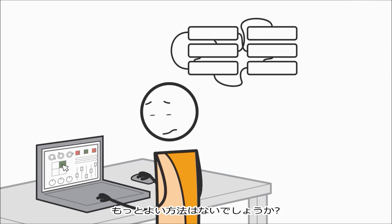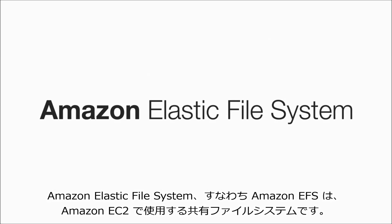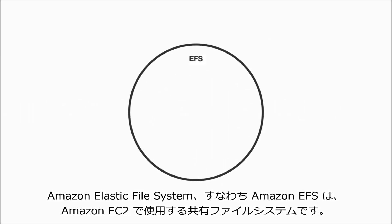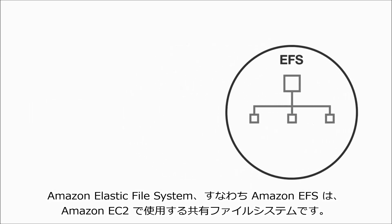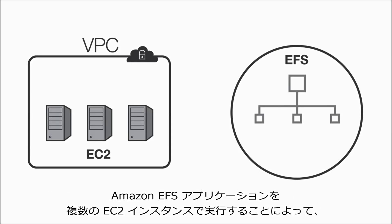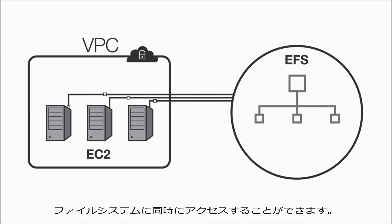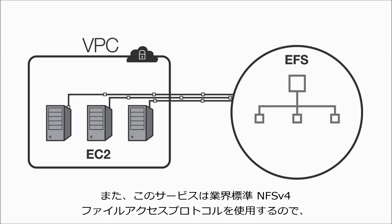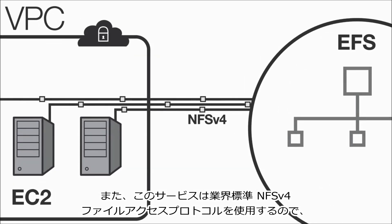What if there was a better way? Amazon Elastic File System, or Amazon EFS, is a shared file system for use with Amazon EC2. With Amazon EFS, applications running on multiple EC2 instances can access your file system at the same time. And the service uses the industry standard NFS version 4 file access protocol.